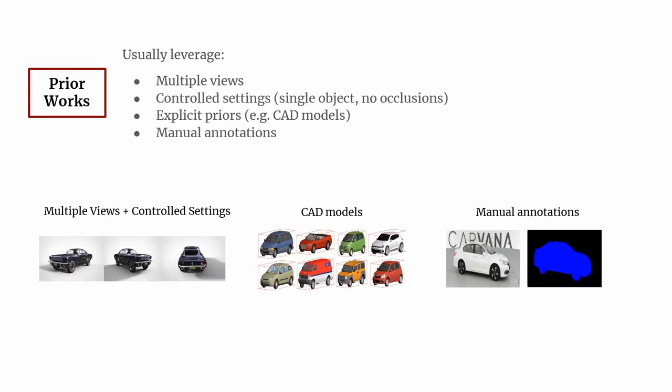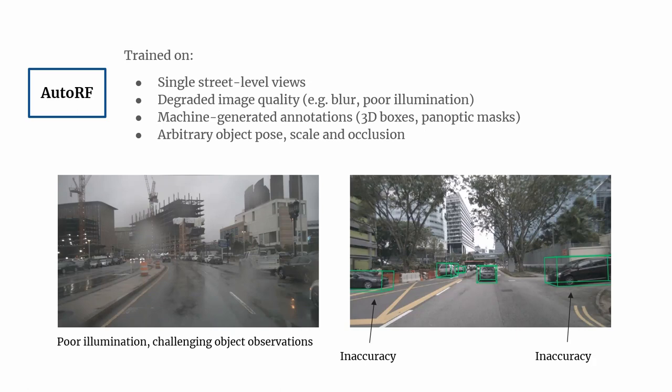Most prior works rely on multi-view correspondences, require a controlled setting, use explicit priors, or are focusing on single objects without occlusions. In contrast to typical novel view synthesis data, AutoRF is trained on monocular street-level images with machine-generated labels only. The overall data quality is comparably degraded by poor illumination, motion blur, and inaccurate annotations.